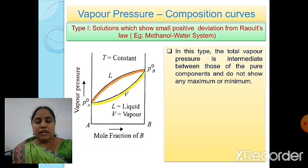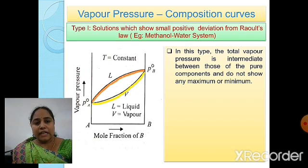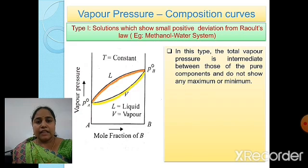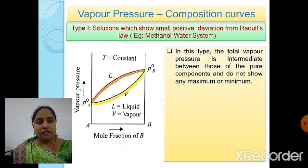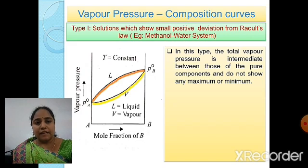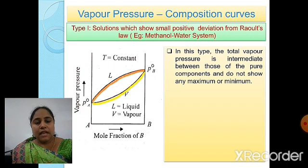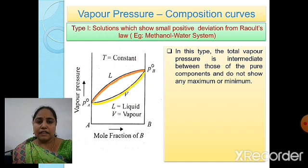We consider two liquid components, A and B. In this case, the vapor pressure of A is less than that of B, which means Pa⁰ — the vapor pressure of pure A — is less than Pb⁰ — the vapor pressure of pure liquid B. There are two curves in this diagram: one indicated by red color and the other by yellow color.